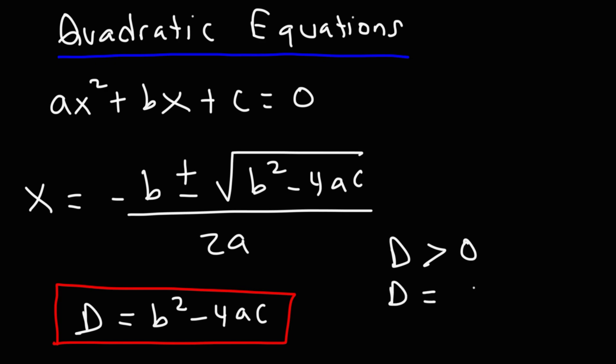If the discriminant equals zero, you have one real solution. If it's less than zero (negative), you have two imaginary solutions. The imaginary number i equals the square root of negative 1, so anytime you get a negative value inside a square root, you're dealing with imaginary numbers.